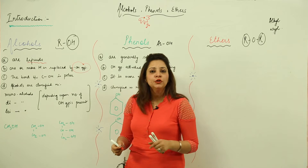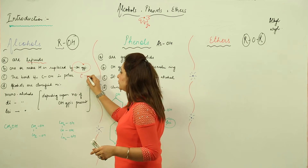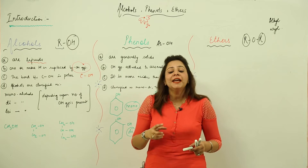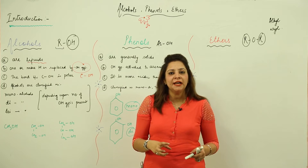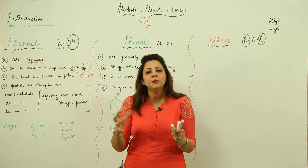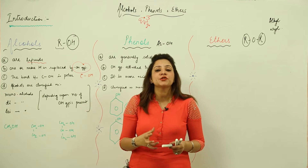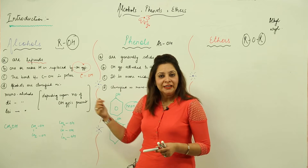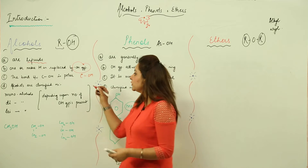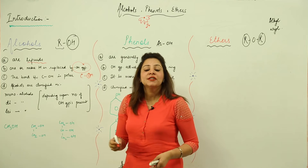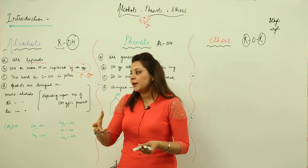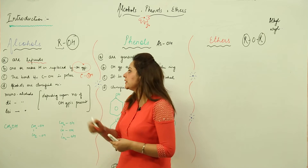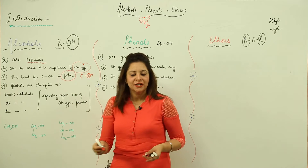In alcohol, the hydroxyl group is directly attached to the carbon atom. Whenever we take into account the bond between any atoms, there is a factor of polarity. It is polar in nature because oxygen is more electronegative, so it pulls the electron pair more toward itself. We can say that the bond between C and OH is polar in nature.